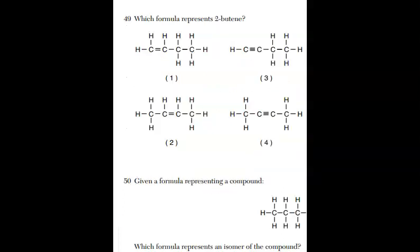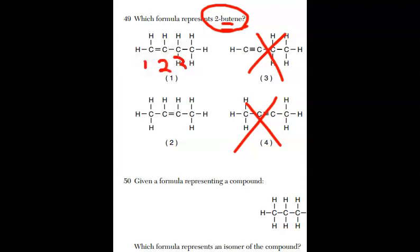Question 49, which represents 2-butene. Bute, B-U-T, tells me I have a four-carbon chain. The E and E ending tells me I have a double bond in that chain. Therefore, it cannot be choice 3 and it cannot be choice 4. 2-butene means the double bond starts on a second carbon. Here, in number 1, if I count my carbon chain, 1, 2, 3, and 4, it's starting on the first carbon. For choice 2, 1, 2, 3, 4, it's starting on the second carbon. So choice 2 is my answer.